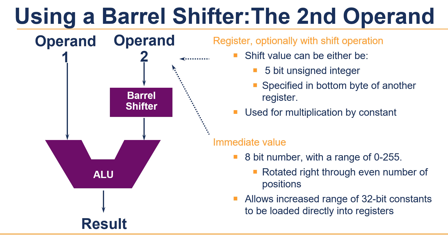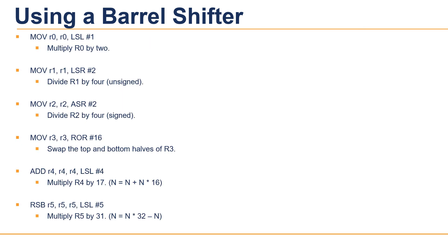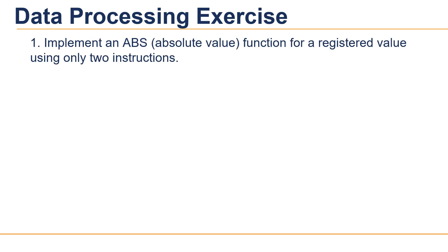In the first example, register R0 will be multiplied by two and the result stored back in R0. The second instruction is used for unsigned division, and the third is used for signed division. The fourth instruction rotates right by 16 bits, which swaps the top and bottom halves of register R3.